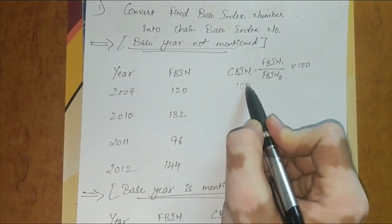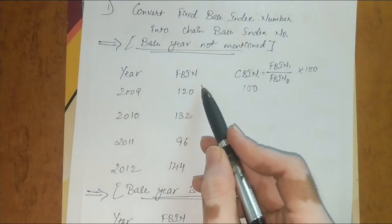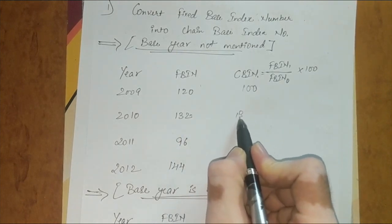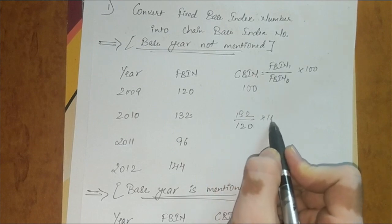It's 100. How will we find the second? Same, P1 upon P0 into 100. FBN of current year, 132, upon previous year 120 into 100.